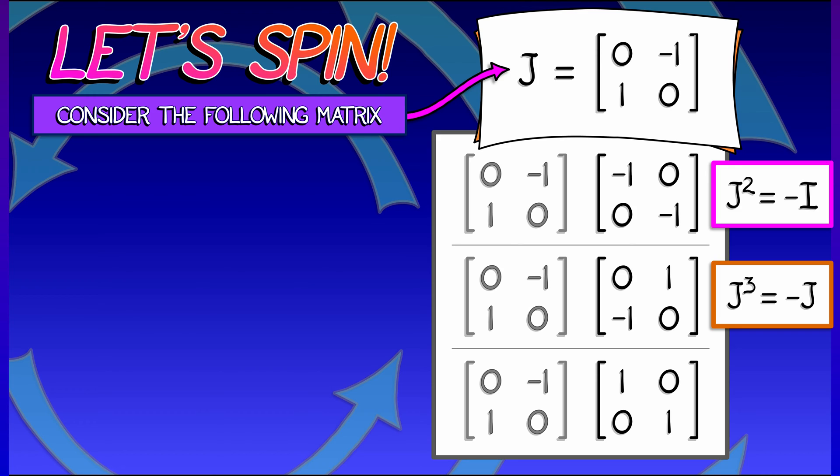As a result, that is J to the fourth equals I. And that really makes sense since J squared is minus I. J to the fourth is J squared times J squared. Yeah, good. I get that.